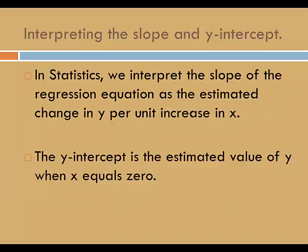How do we interpret the slope and y-intercept? In statistics, we interpret the slope of the regression equation as the estimated change in y per unit increase in x. And the y-intercept is the estimated value of y when x equals 0.